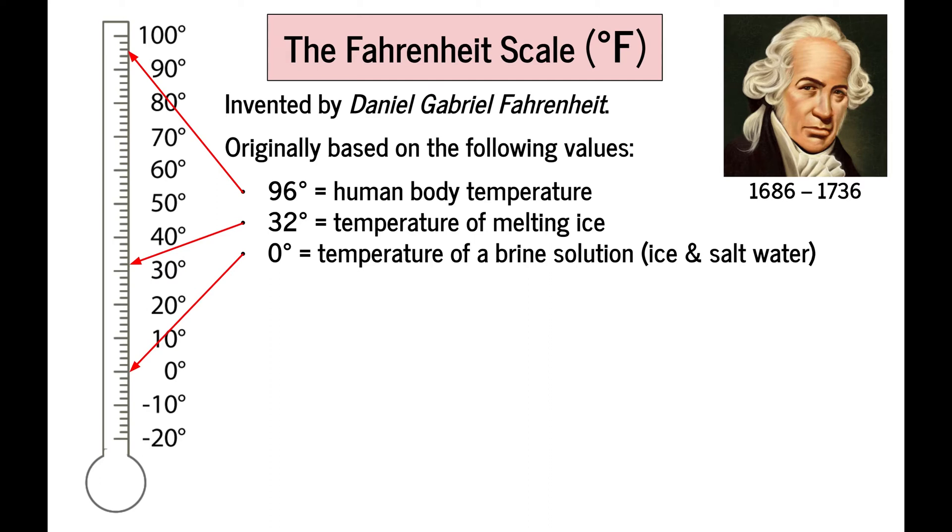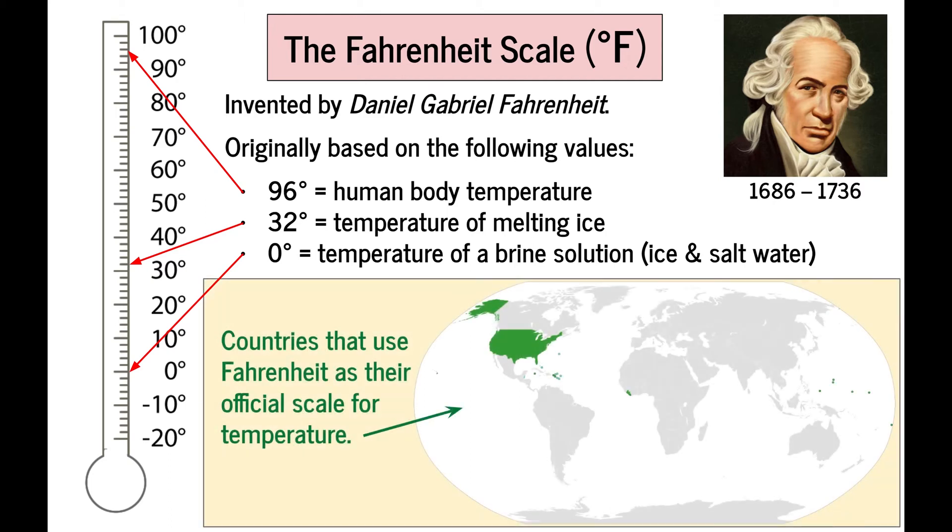These three temperatures formed the increments of the Fahrenheit scale. Now, if it's not immediately obvious, the reason this scale isn't used as commonly anymore across the world is because it's based on three separate things. The human body, ice, and brine, which again is like ice and salt water put together. So there's no one thing that this scale is based on. Across the world, there are very few countries that use Fahrenheit as their official scale for temperature anymore. In fact, the United States is the only highly developed nation that still uses it. The rest of the world uses a scale called Celsius, which we'll talk about next.